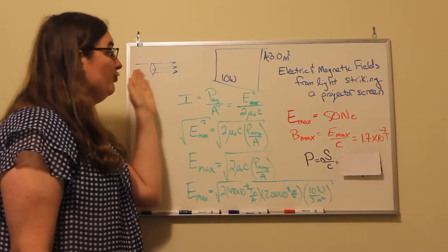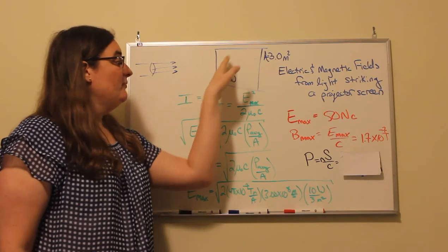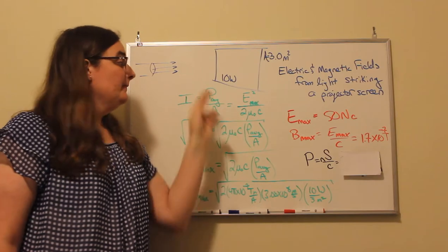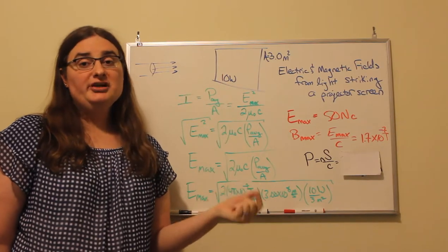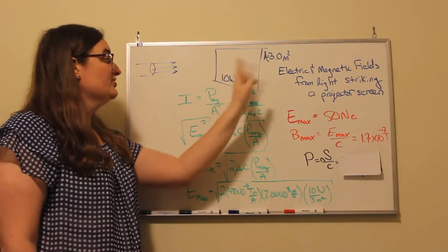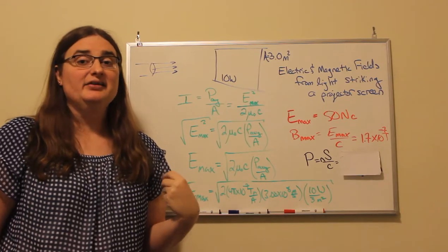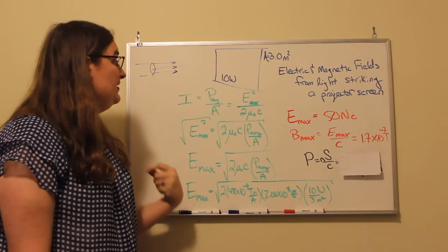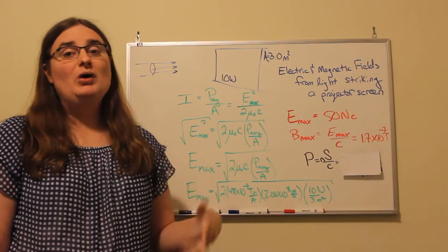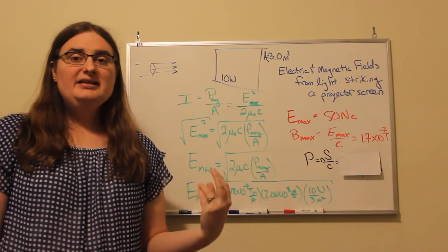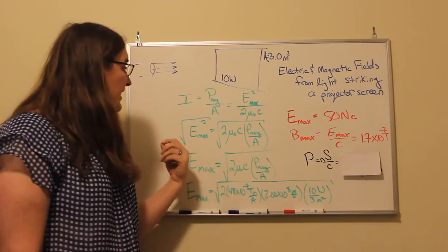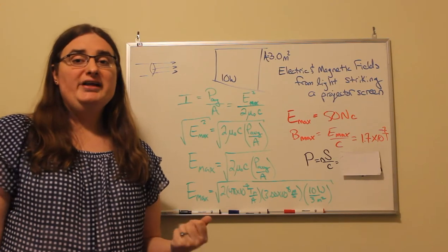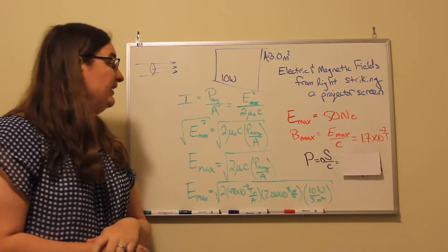So for a typical projector, you might have about 10 watts of light power being delivered to the screen and a typical area for a projector screen is around 3 square meters. So that means the intensity of the light is going to be about 3.33 watts per meter squared. And intensity on average is the same thing as roughly the size of the Poynting vector for a plane light wave.